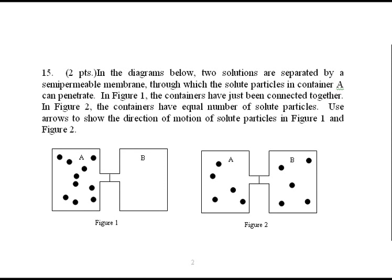And then in question fifteen, you're supposed to use arrows to show the direction of motion of solute particles in figure one and figure two. So if you look at figure one, and you have that semi-permeable membrane, you can assume that the particles are moving from A to B, an area of higher to lower concentration.